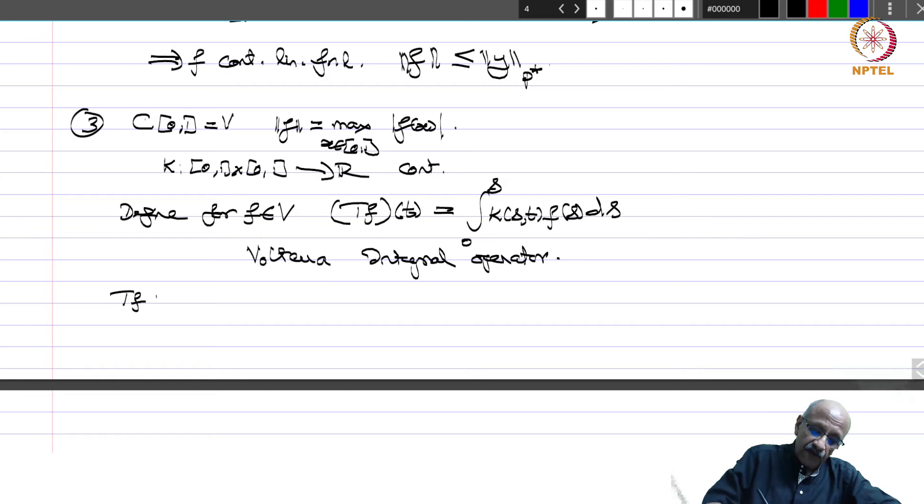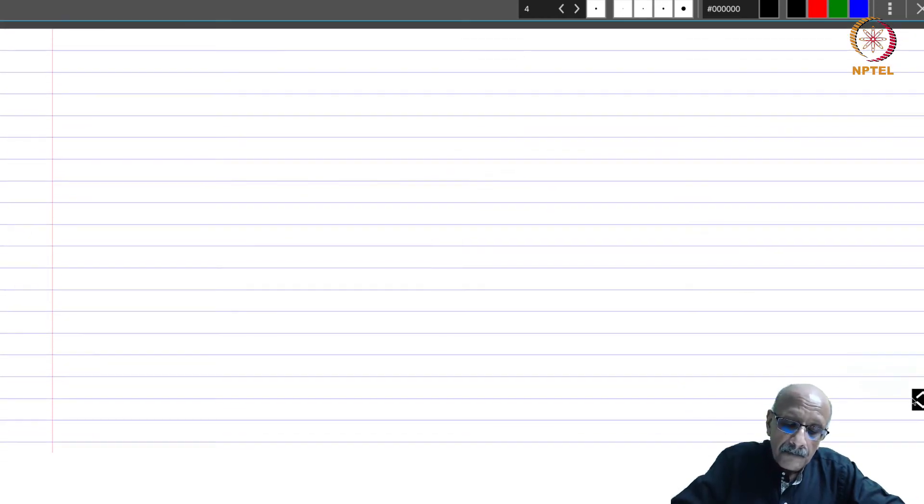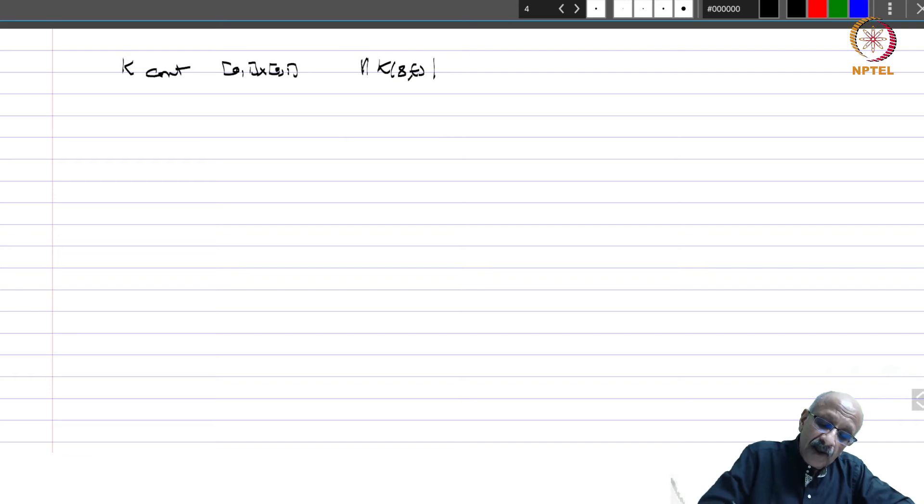We want to show two things: one is that tf belongs to v and t from v to v is continuous. It is linear is clear. k is continuous on the compact set [0,1] cross [0,1]. So it is uniformly continuous and bounded. Let us say we have that mod of k(s,t) is less than or equal to some constant k.